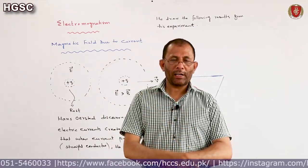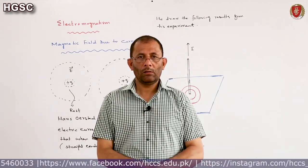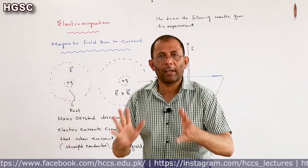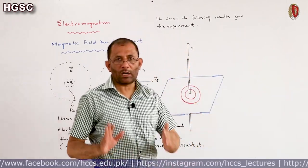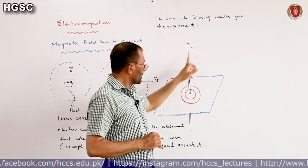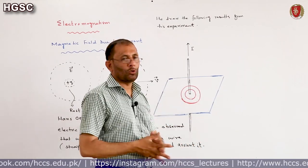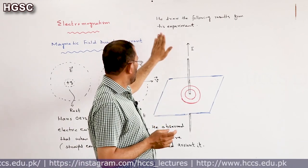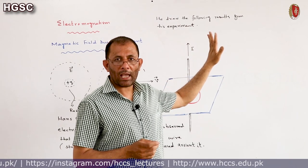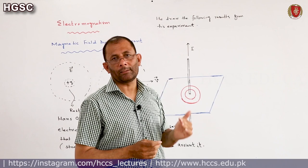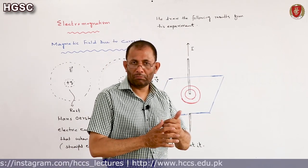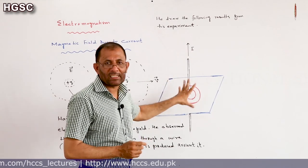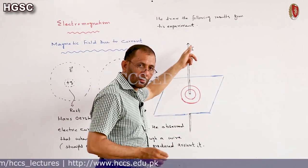There are three important results from Oersted's experiment. First conclusion: magnetic field persists around the wire as long as the current continues to flow through the wire. Magnetic field exists so long as current flows — 'persist' means to remain or continue to exist. So magnetic field exists as long as current is flowing.